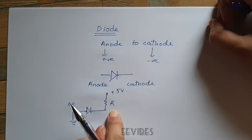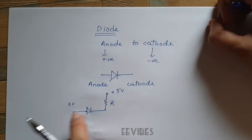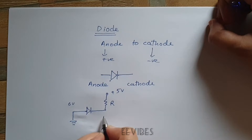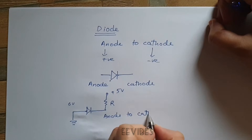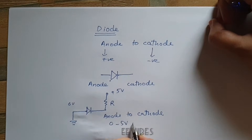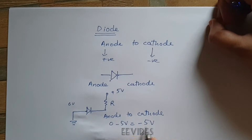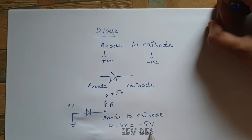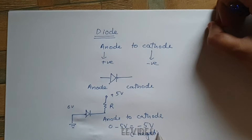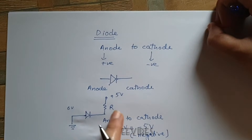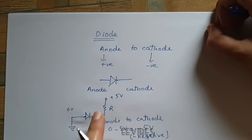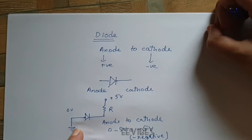If you calculate the potential from anode to cathode, you get zero minus five volts, which equals minus five volts. Since the anode-to-cathode potential is negative, there will be no conduction through the diode in this circuit.